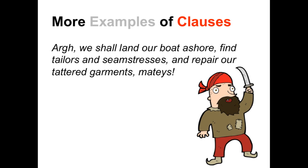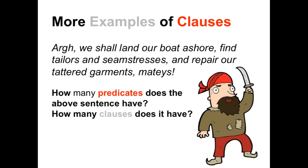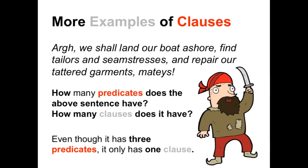And here's a final example of clauses. 'Arrgh! We shall land our boat ashore, find tailors and seamstresses, and repair our tattered garments, mateys.' How many predicates does this sentence have, and how many clauses? Well let's count the predicates: 'land,' 'find,' and 'repair' — three predicates. Who or what will land, find, and repair? There's only one subject which takes all of those predicates: the pronoun 'we.' We land, find, and repair. So even though this sentence has three predicates, it only has one clause — because one subject takes a compound predicate.